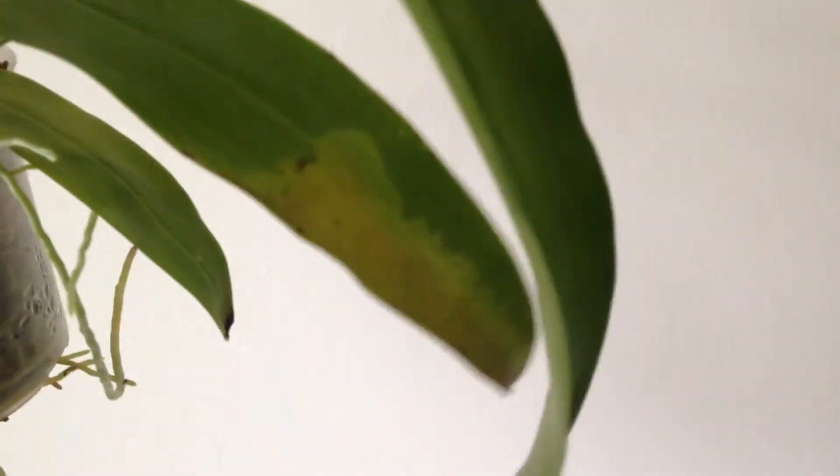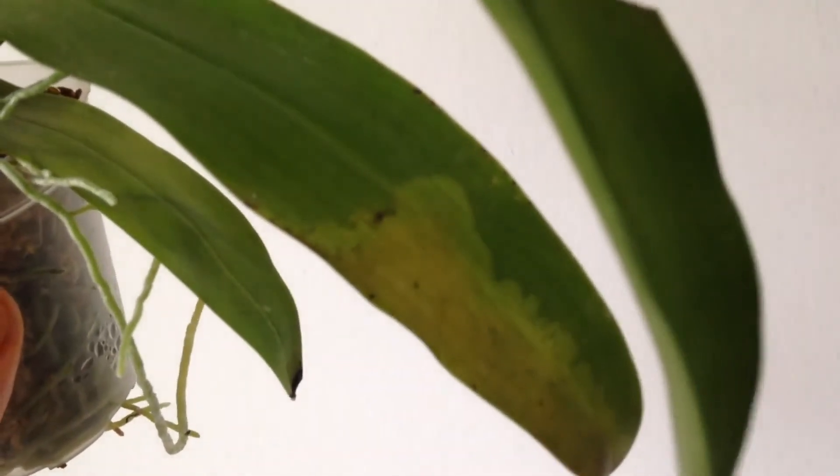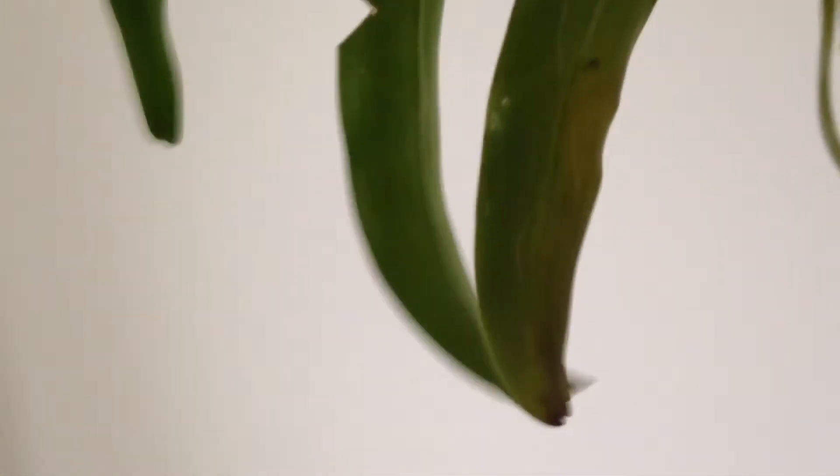But lately I noticed that one leaf was water soaked. I think I checked it the week before so it must have developed during one week or less. It really depends on the light how obvious the infection is. I noticed it when the light was shining through the leaf.